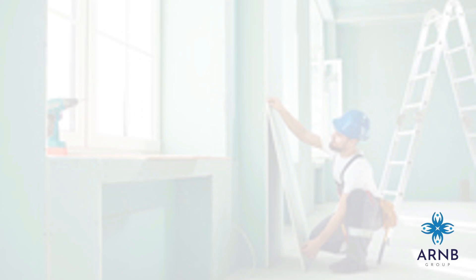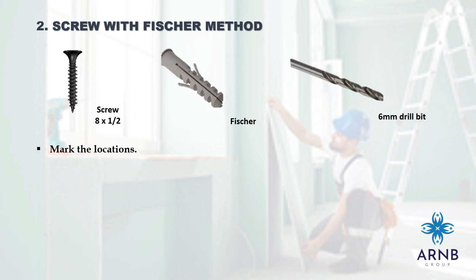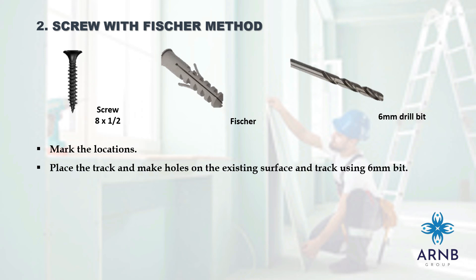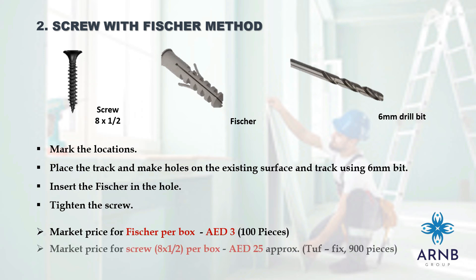The second track installation method is screw with fissure, which is the most commonly used method. Mark the location, place the track and make holes on the existing surface and track using a 6 mm bit, insert the fissure in the hole and tighten the screw. Market price for fissure is approximately 3 AED for a box containing 100 pieces, and market price for screws is approximately 25 AED for Taiwan-made Tufex brand, which contains 900 pieces per box.